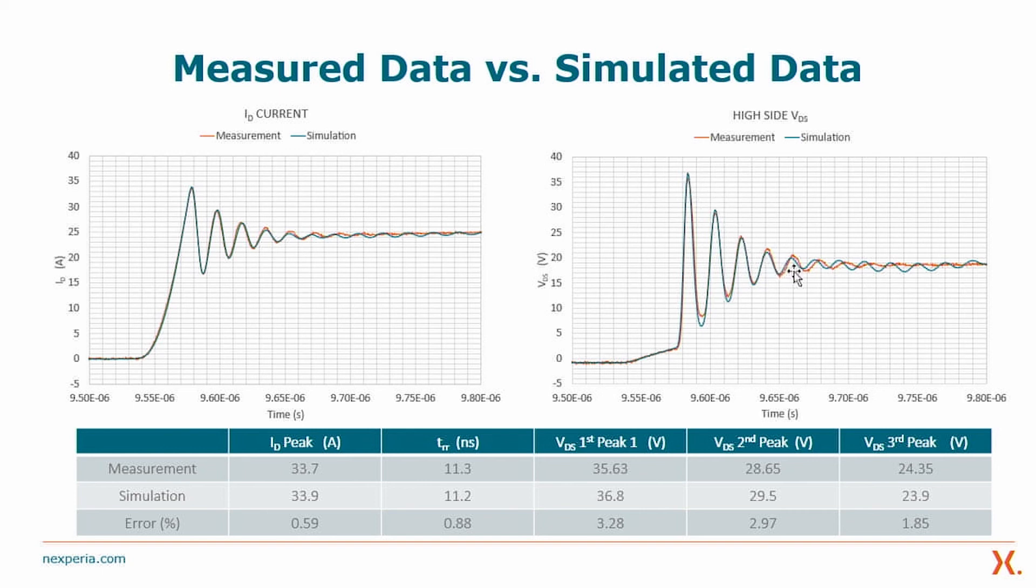If we look at numbers, the peak current has just a 0.6% error between measurement and simulation. Similarly, the base of the QRR area, which is TRR, the reverse recovery time, has an error of just about 0.9% between measurement and simulation.